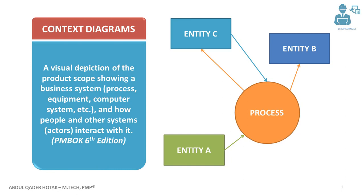In this diagram shown on the right, the process in a context diagram should be shown with a circle. The data flow is shown by arrows. Other entities — which could be another system, people, or other processes — are shown by rectangular shapes.